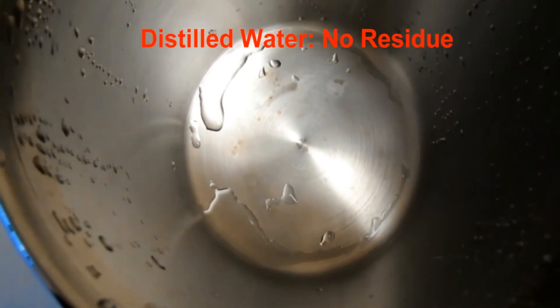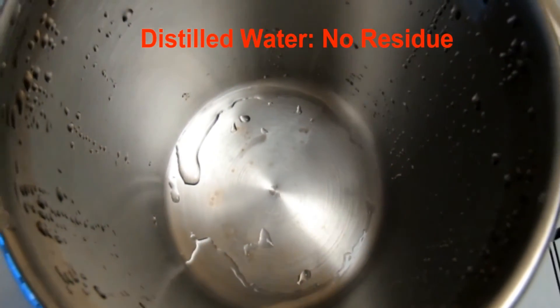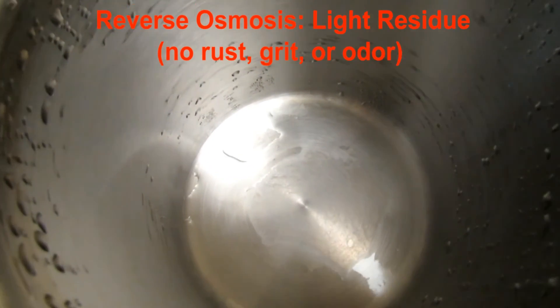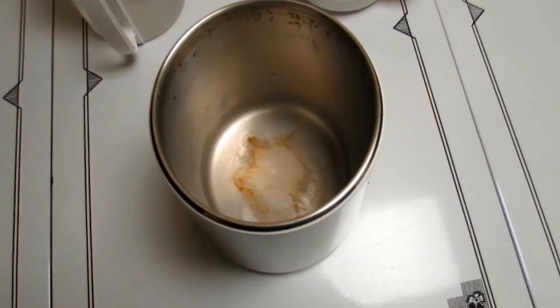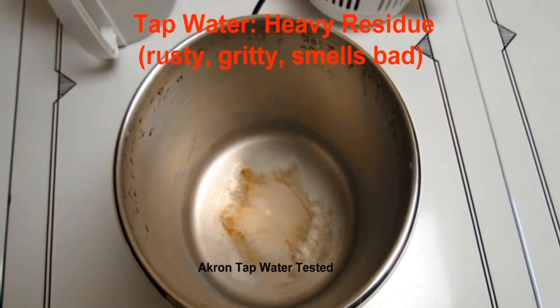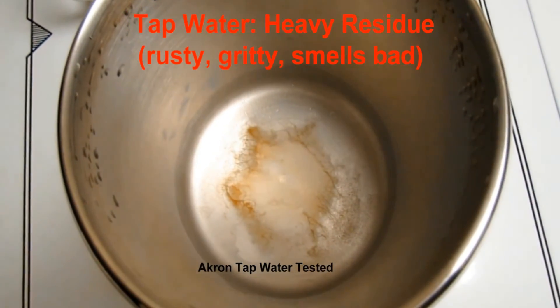So let's recap: distilled water, no residue. Bottled water, residue not as bad, but it could be fluoride because reverse osmosis doesn't filter out the fluoride. Tap water, especially Akron tap water, heavy residue, rusty, gritty, and a bad odor.